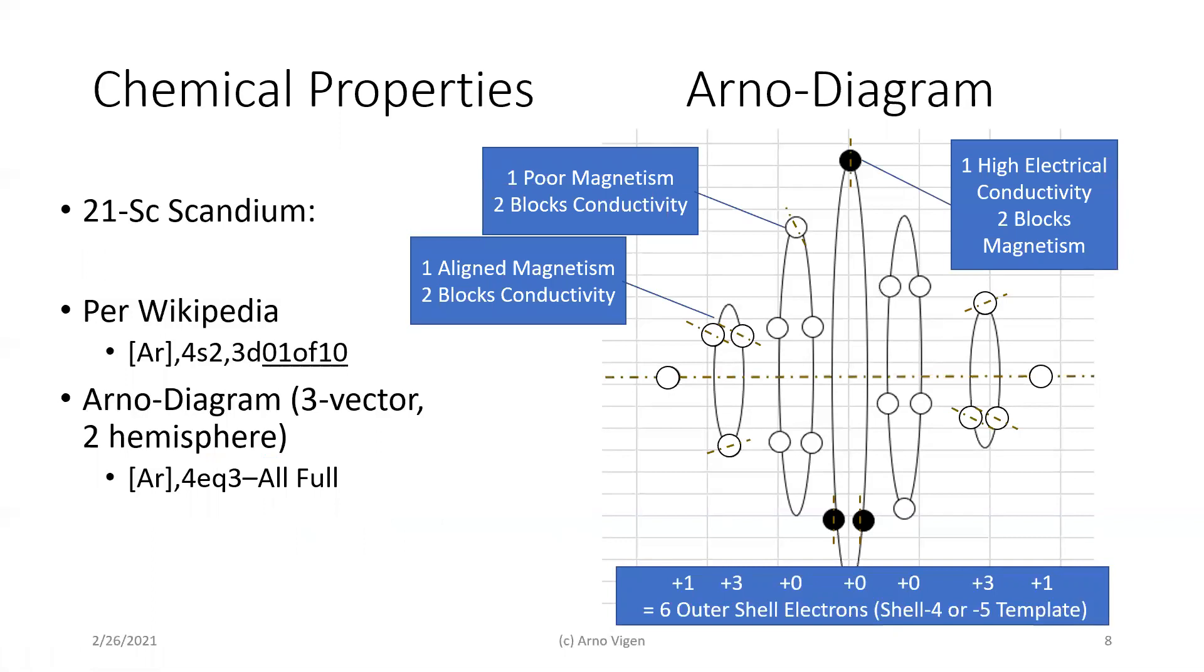Now, what does this do to chemical properties? Why is my method, the Arno diagram, better at explaining electron behavior and configurations than the strict AFBAL or the current set of exceptions, which is one of the hottest debated items in all of chemistry?